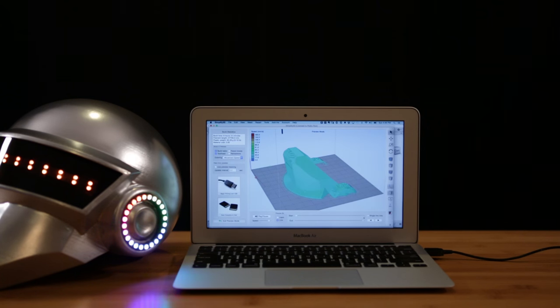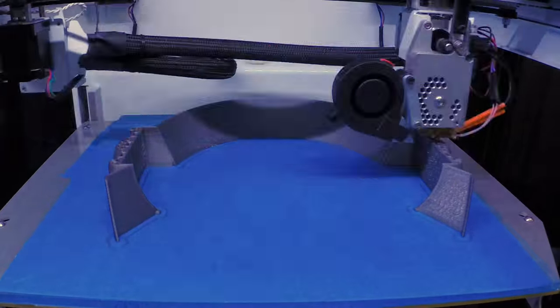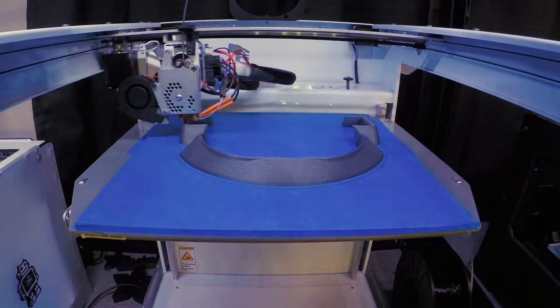We sliced it using Simplify3D and got away with having to use no support material. It was 3D printed on the biggest printer that we have which happens to be the Type A Machine Series 1. It took a few days to 3D print.